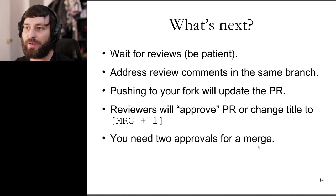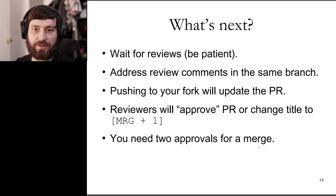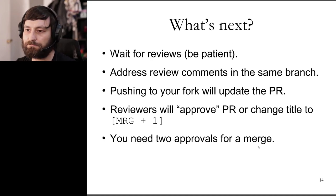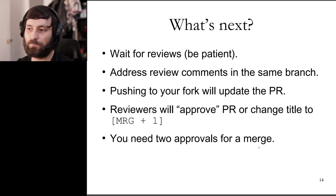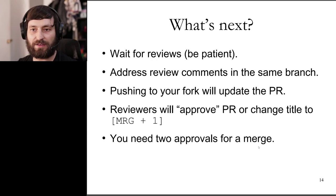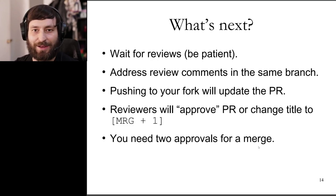To address any comments, just update the branch locally and push to your fork — the pull request will automatically update, so you don't need to close it and open a new one. This will go back and forth a few times. Once reviewers are happy, they'll approve the pull request using GitHub's approval feature. You need two approvals from scikit-learn core developers to get merged. It might take some time to get reviews, so please be patient, but feel free to ping developers on your pull request or in chat.